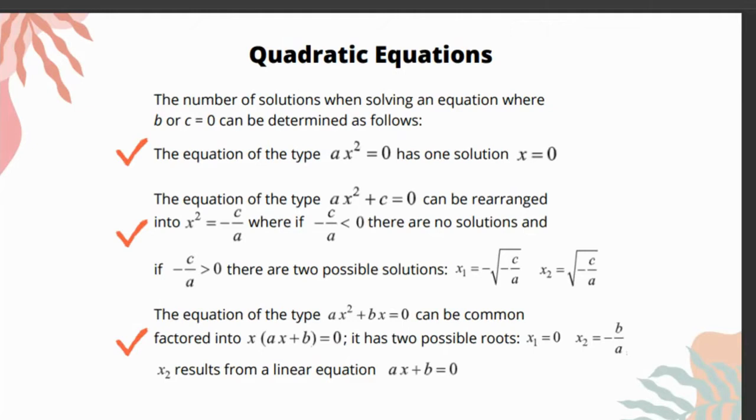The equation of the type ax² + bx = 0 can be common factored into x(ax + b) = 0. It has two possible roots: x = 0 and x = -b/a.